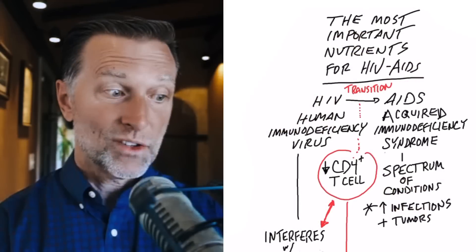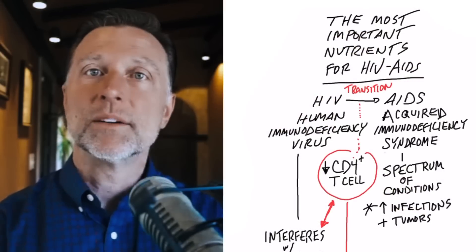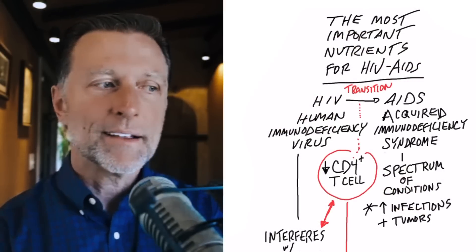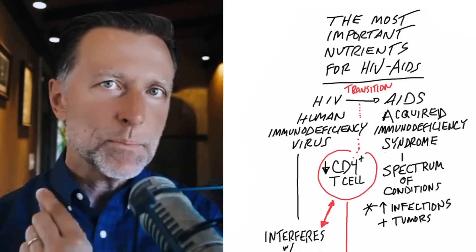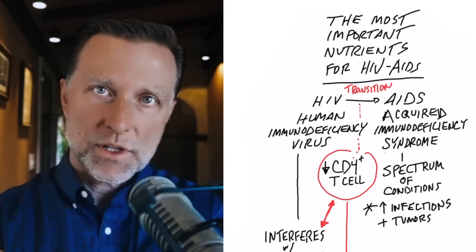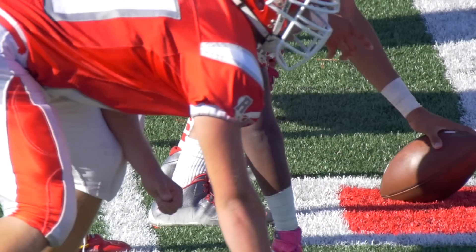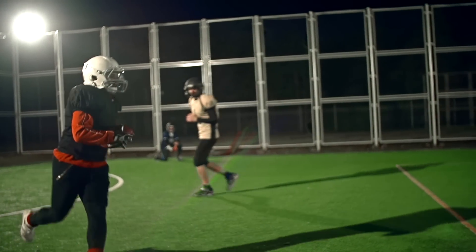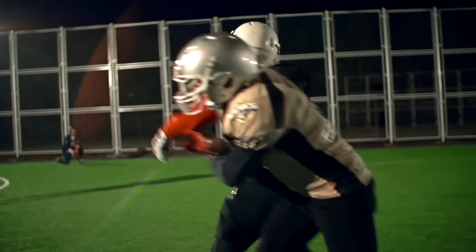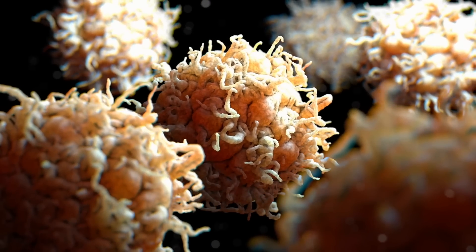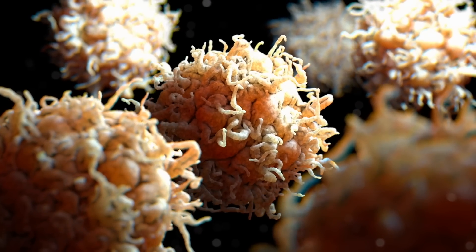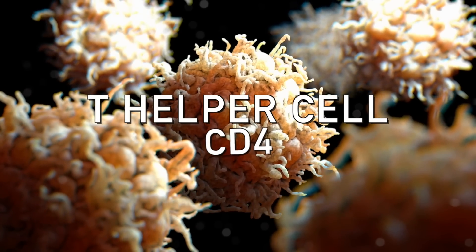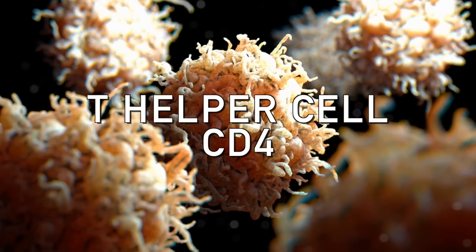AIDS is a condition where you basically don't have an immune system anymore, because that virus targets a key player within your immune system. It's like the quarterback of the entire team. If you're playing football and you don't have a good quarterback, you can't ever win — you can't even run a play. The quarterback is an essential key player. As far as your immune system goes, the T helper cell, called CD4, is that quarterback.